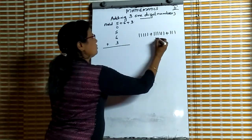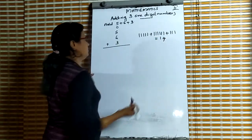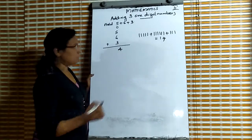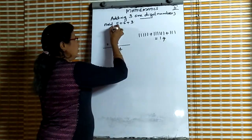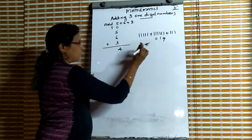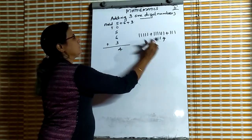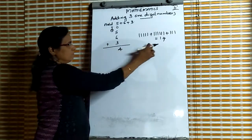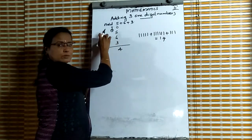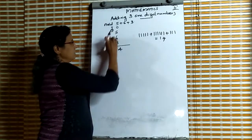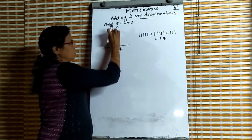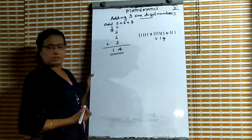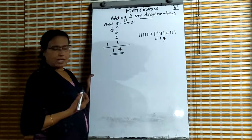This is equal to 14. For 14, we write 4 in the ones place, and this 1 goes to the next place — that place is the tens place — and this one goes as a carry. This one is the carrier. That goes to the tens place. There are no other numbers here, so we write the 1 itself. So the answer is 14.